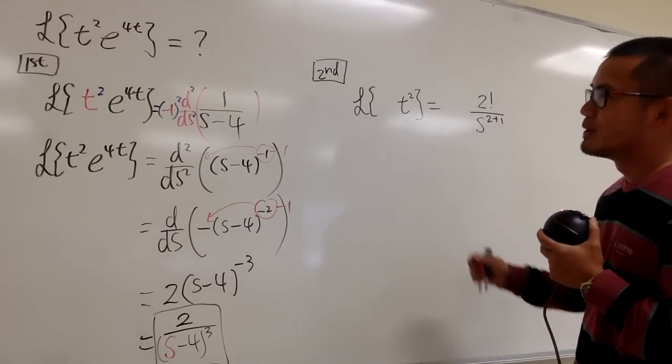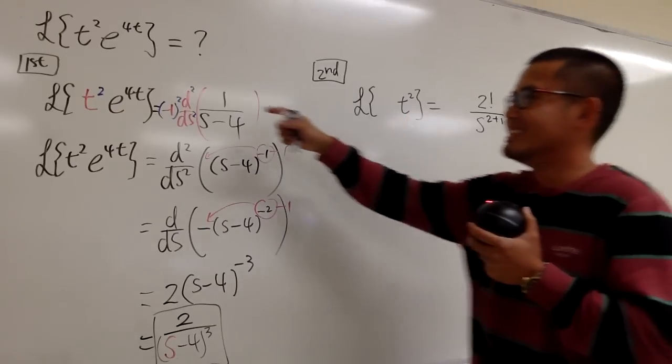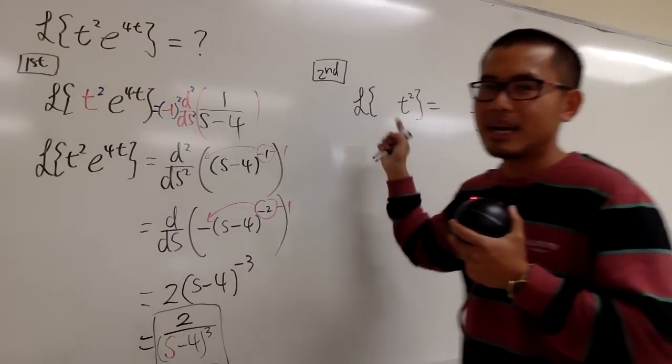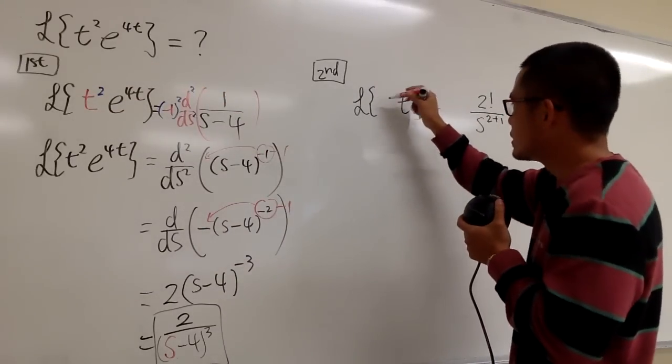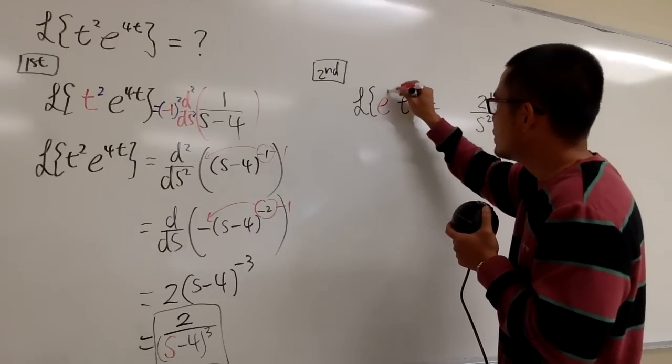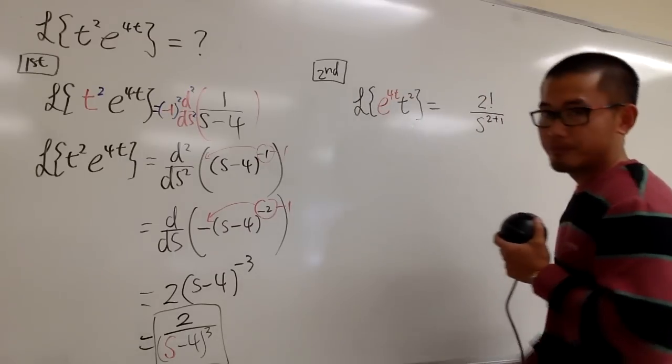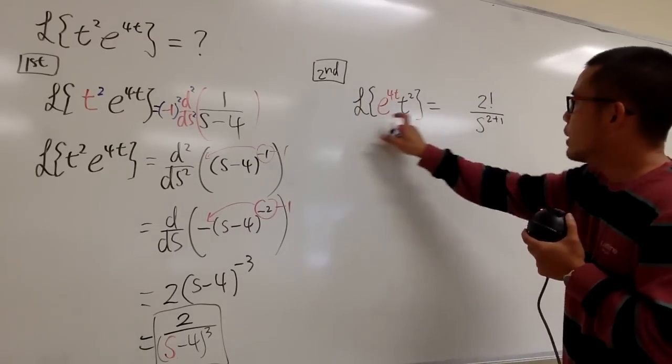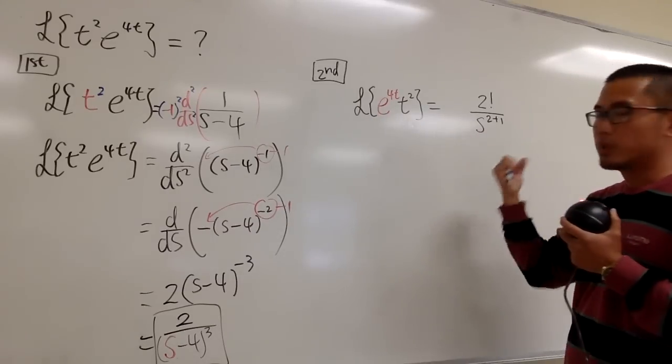And now, this is not what we want, though. We need to multiply the inside by e to the 4t. So let me just put this down in the front, e to the 4t right here.